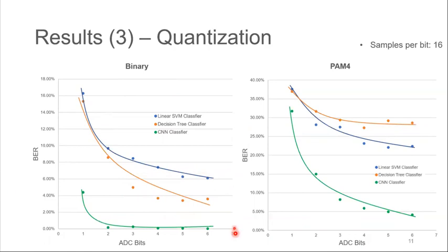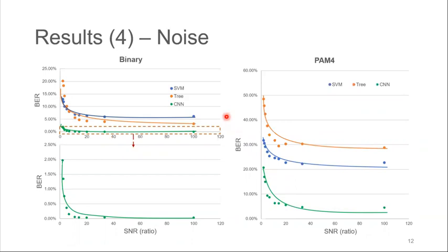We also studied the effect of noise. We add white Gaussian noise at different power levels to the signal and evaluate the performance of different classifiers. Here, the x-axis is the SNR in terms of ratio, and y-axis is the BER. And this is also the zoomed-in version for CNN. We can see that the noise doesn't really have much effect until the SNR drops below 20, and after that, it goes up rapidly. Which reminds us that, like any other methods, the SNR needs to be a reasonable level, or there will be no way to recover it at all.